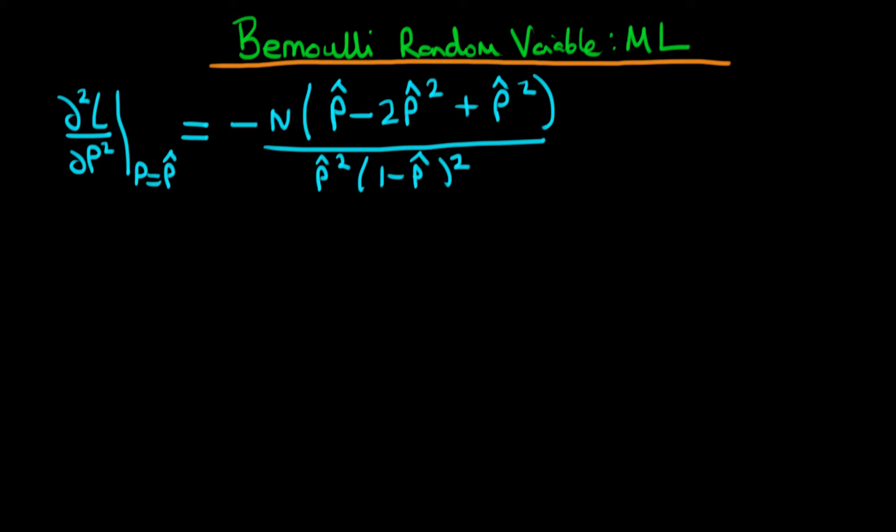At the end of the last video, we got to this particular expression for the second derivative of the log likelihood with respect to P, which was then evaluated at P equals the maximum likelihood value, or the estimator for P. And we got this expression here on the right.